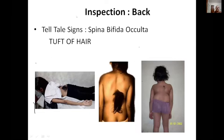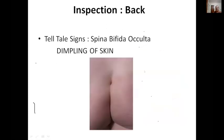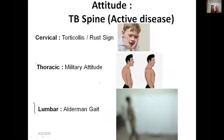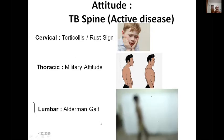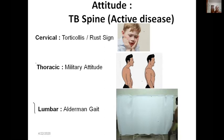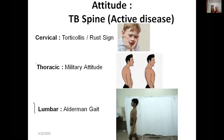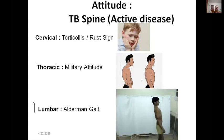For spina bifida occulta look for tufts of hair not only in the lumbar spine but also in the thoracic or cervical spine; also look for lipomas and skin dimpling. Regarding attitude: in active tuberculosis of the cervical spine, a child may present with torticollis or a rust sign (holding the head with hands). In the thoracic spine, spasm can cause squaring of shoulders — a military attitude. In the lumbar spine, spasm produces the alderman gait.